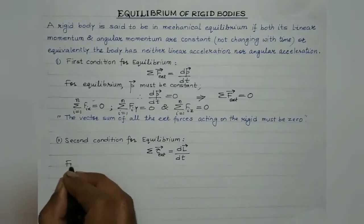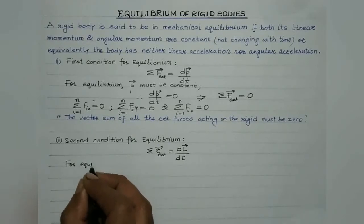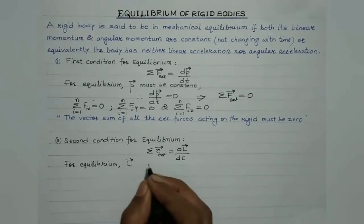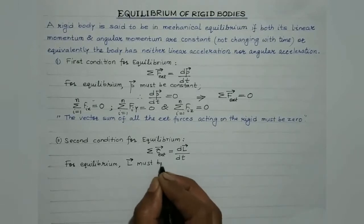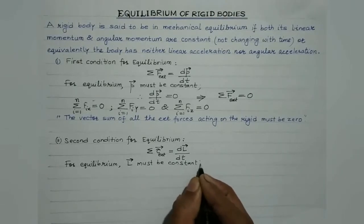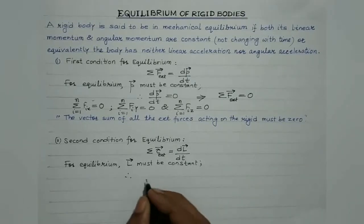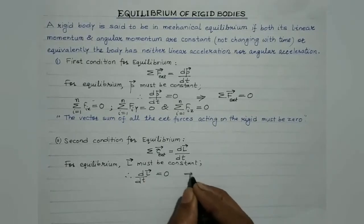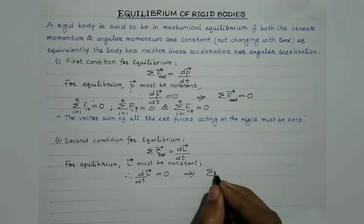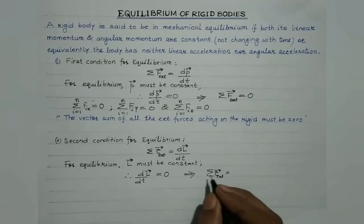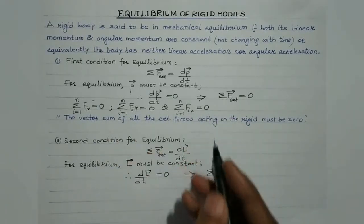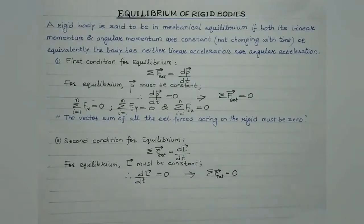For equilibrium, the angular momentum L must be constant. Therefore, the differentiation of angular momentum must equal zero, which implies that the net external torque — the vector sum of all external torques acting on the body — must also be zero.